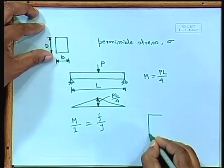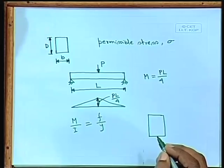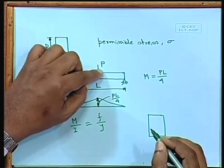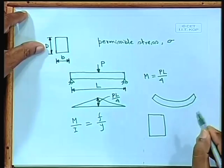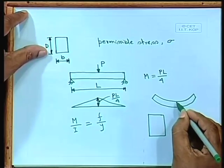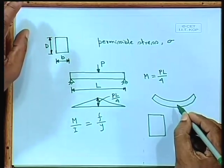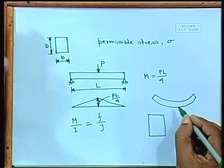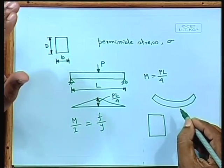For a simply supported beam, we get compression at the top and tension at the bottom because the beam deflects downward. In a cantilever, it is the opposite — tension at the top and compression at the bottom. That is why we provide the main longitudinal reinforcement at the top for cantilevers. The main reinforcement resists the tensile stress; there is also nominal secondary reinforcement for other reasons.